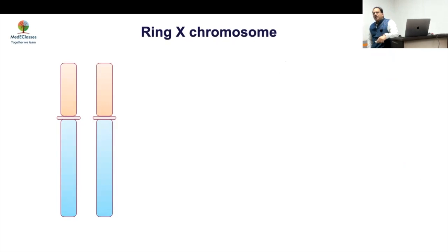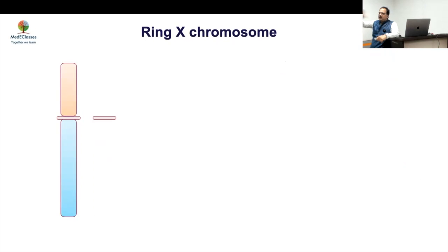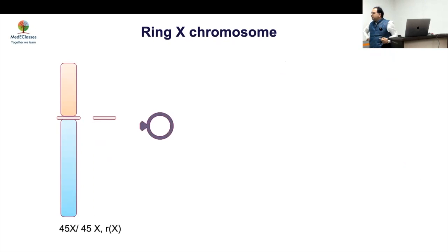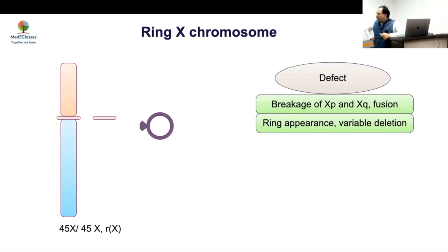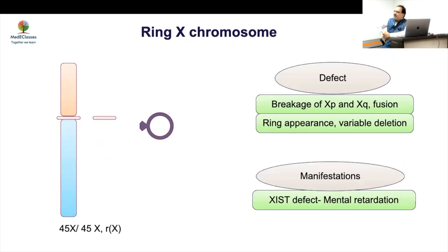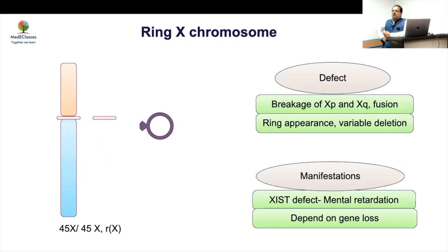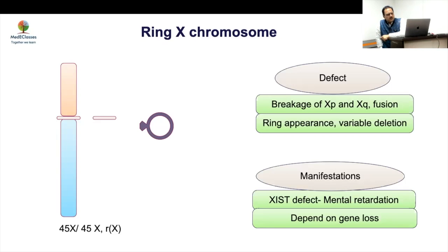The ring chromosome, where the chromosome is cut and forms a ring, presents unusually — with features of mental retardation along with severity of skeletal dysplasia and growth failure. This is distinct from typical Turner syndrome if the XIST region is affected.